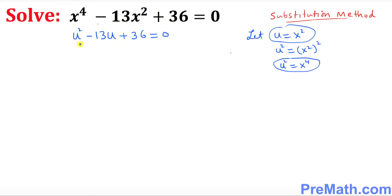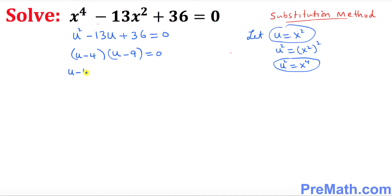This becomes a simple quadratic equation with a u variable. Let's go ahead and factor it. The possible factors are u minus 4 and u minus 9 equal to 0. We're gonna split it up: u minus 4 equals 0, and u minus 9 equals 0.